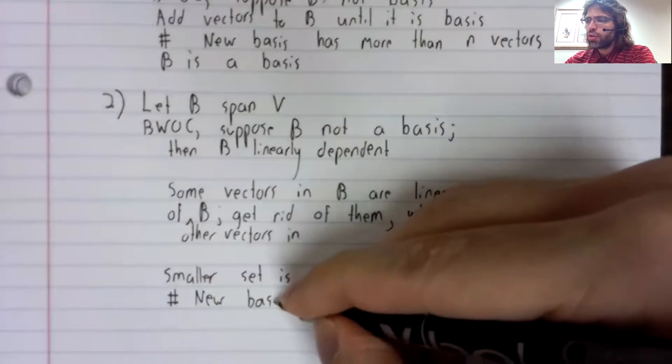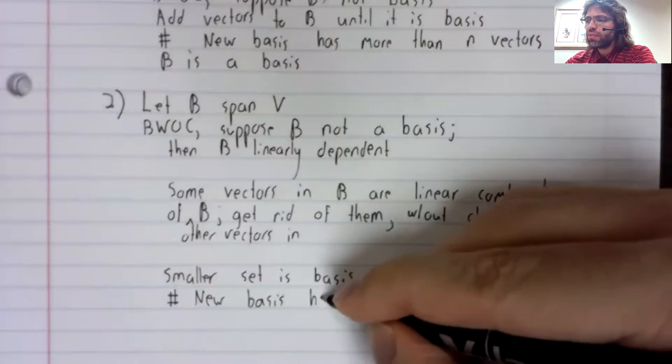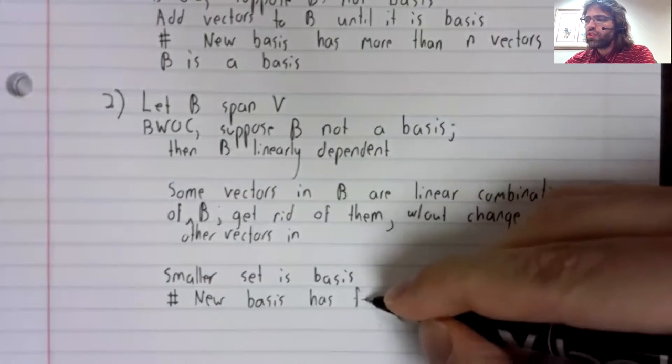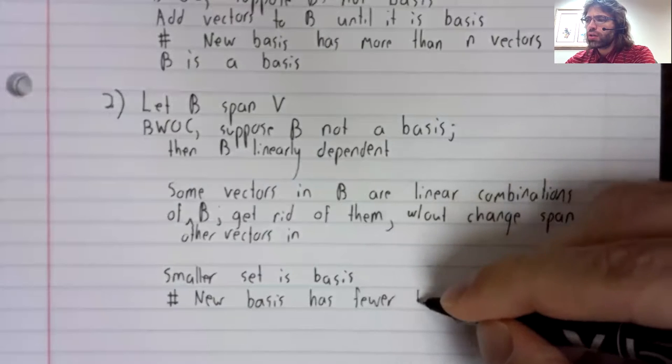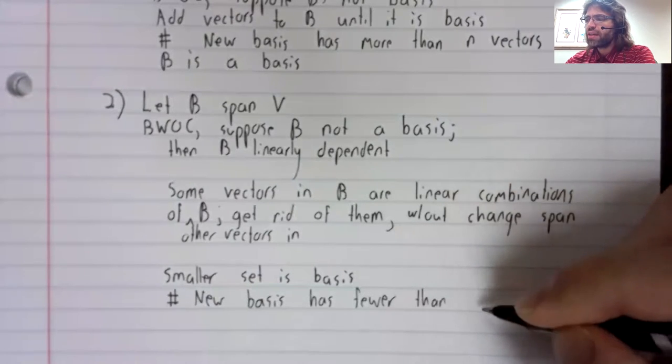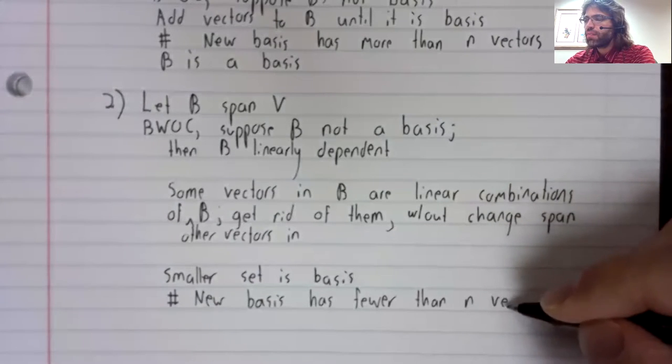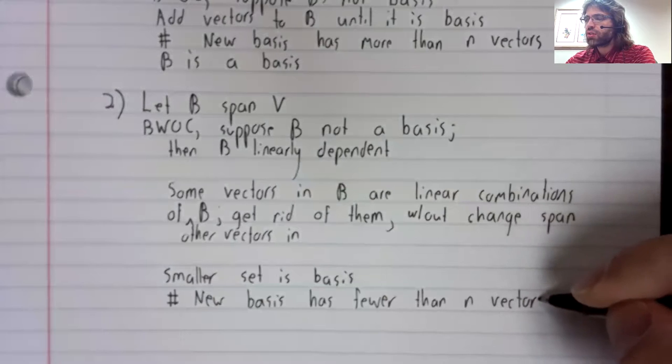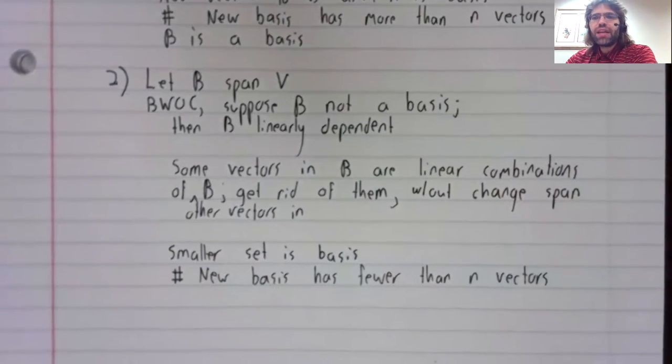Here, our new basis has fewer than n vectors. In any event, this is a contradiction.